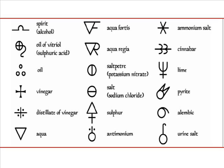Here are some other compound symbols of the time: vinegar, lime, and other common compounds, including sulfur. Each of these symbols were a combination, so it looks as if sulfur is a combination of aqua and other substances.